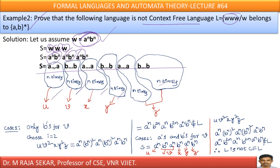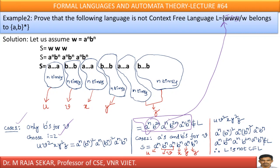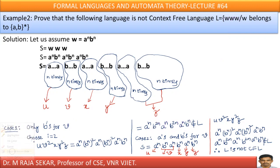Considering case 1 only — say v consists of b's — taking i = 2 and calculating u v^2 x y^2 z, I am getting a string of this type. But it does not belong to L, because L must have the same word appearing twice. Here, if I consider this as word, word, the third part cannot be the same word — it is different. Therefore, it does not belong to L.